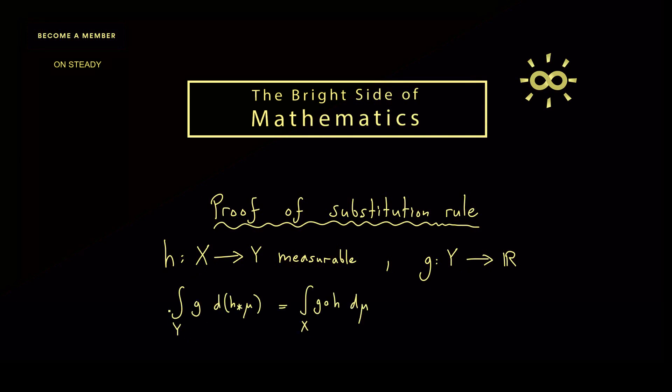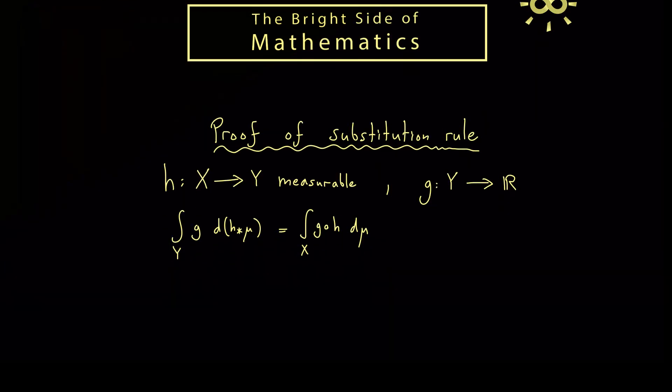It tells us that instead of calculating the integral of g, we can integrate the function g circle h over the measure space X. The formula always holds if you know that one of the two integrals here exists. And that's the whole thing we want to prove now.